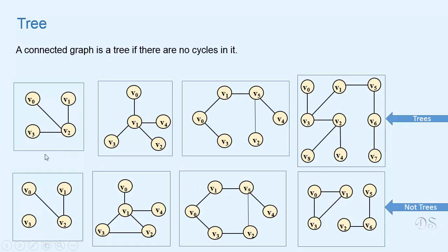Now in a tree there is exactly one simple path between any two vertices. If there is more than one path between two vertices, it would mean that there is a cycle. And if there is no path between two vertices, it would mean that the graph is not connected. So there is exactly one path between any two vertices of a tree.